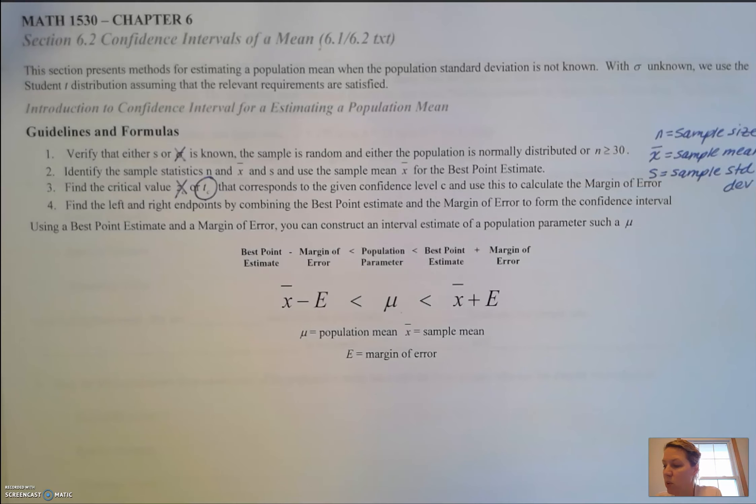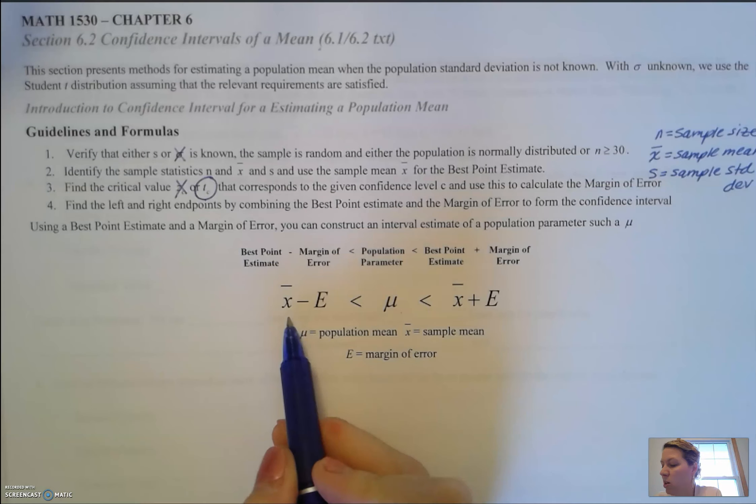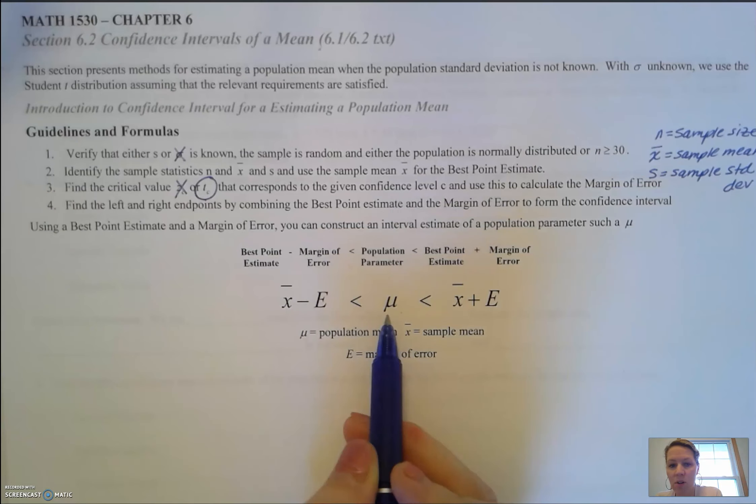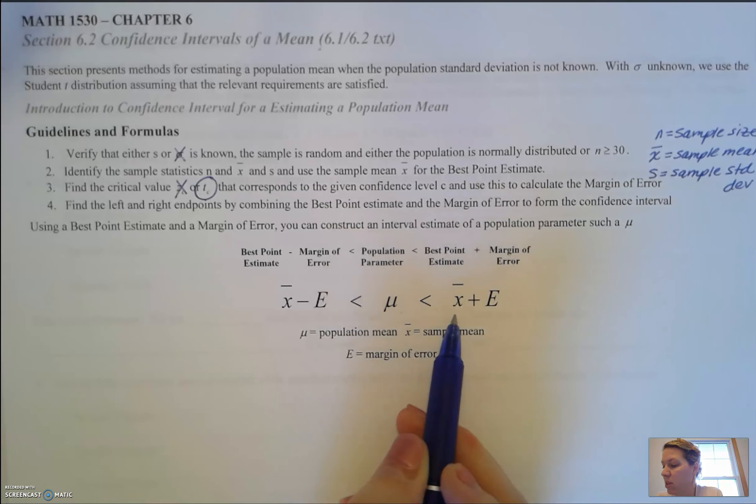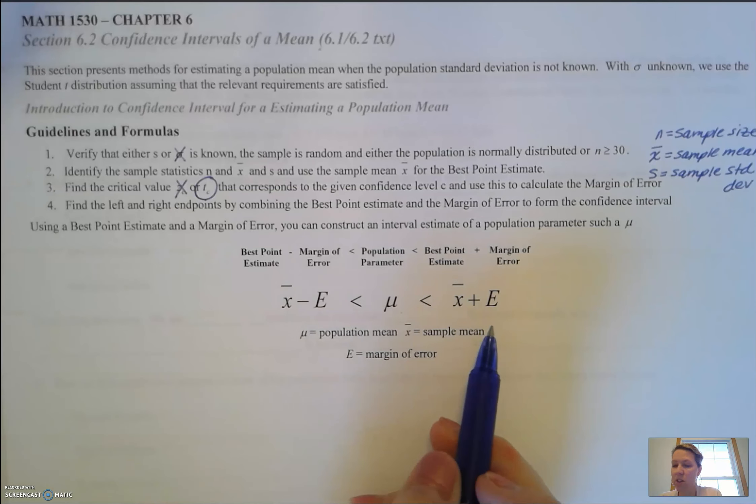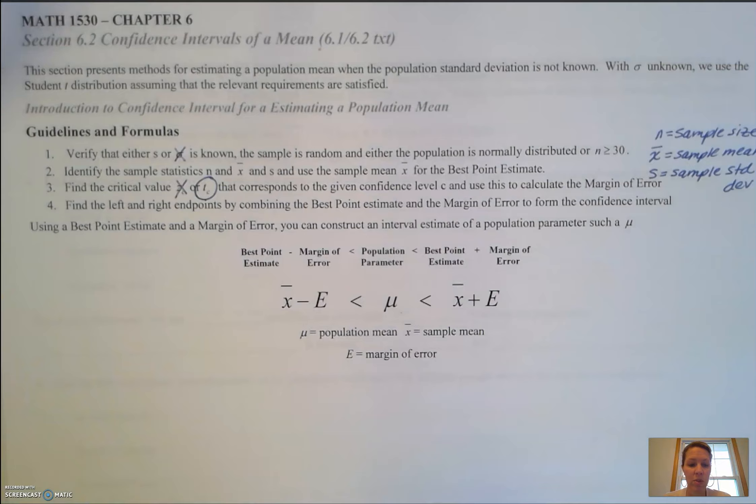We're going to use both of those to find the left and right endpoints by combining the margin of error and the best point estimate to form the confidence interval. We're going to take x-bar minus the margin of error E, which is less than mu, the population mean, which is less than x-bar plus the margin of error E. Instead of proportions, we're going to do these with means.